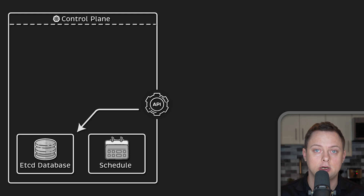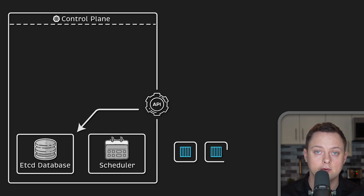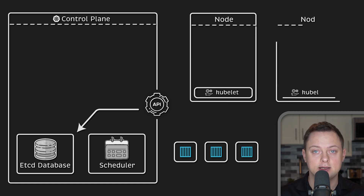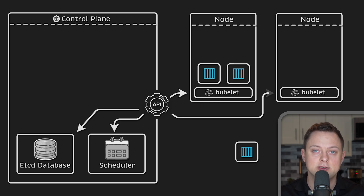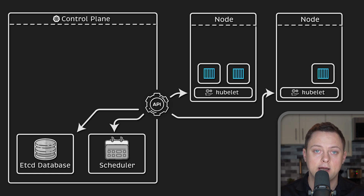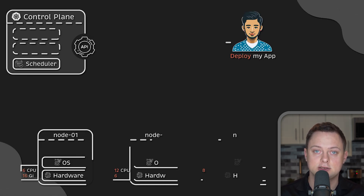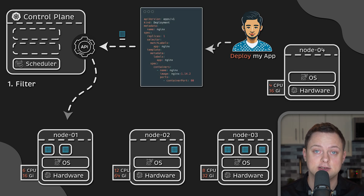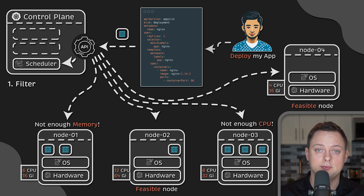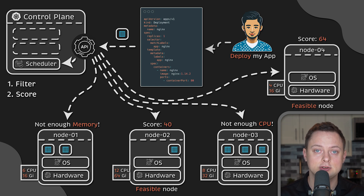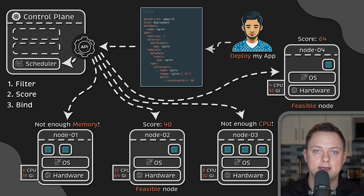Next is the kube-scheduler, another control plane component. It watches for newly created pods, and if a pod is not yet assigned to a node, it will select one based on availability and other cluster constraints — for example, how much CPU or memory a node has, and pod and node affinity as defined in the spec. It's a three-step process: first is filtering, where the scheduler finds the set of nodes where it's feasible to schedule the pod, such as nodes with enough available resources. In the second step, scoring, the scheduler ranks the remaining nodes to choose the most suitable placement. Finally, kube-scheduler assigns the pod to the node with the highest score.